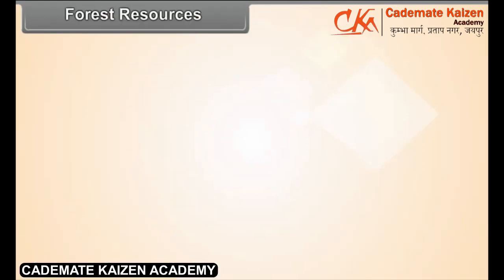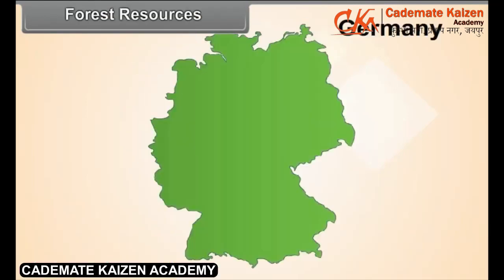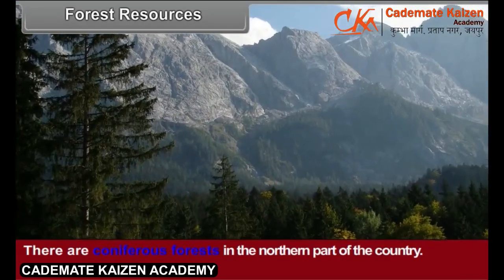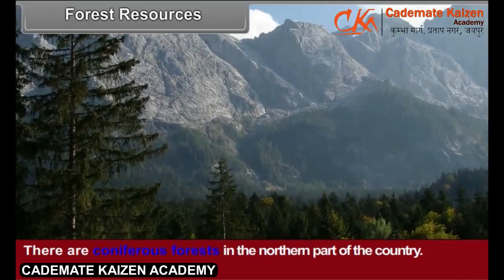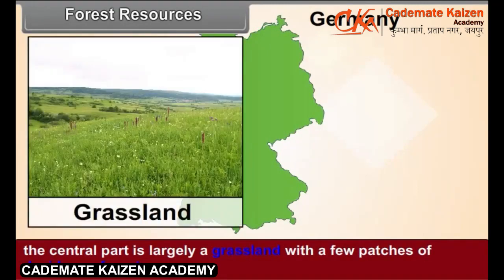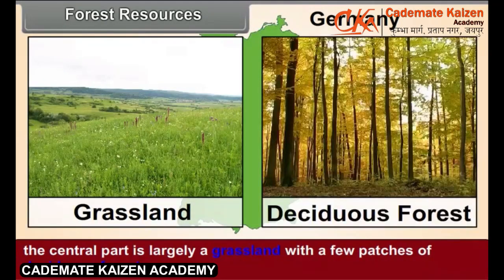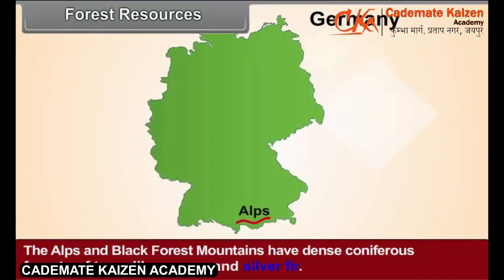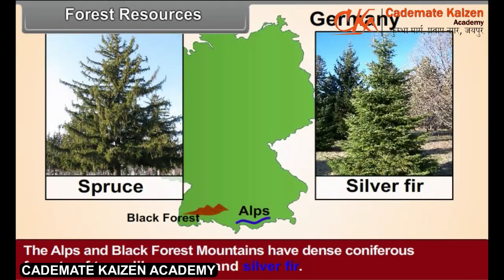Forest Resources. There are coniferous forests in the northern part of the country. The central part is largely a grassland with a few patches of deciduous forests. The Alps and Black Forest Mountains have dense coniferous forests of trees like spruce and silver fir.